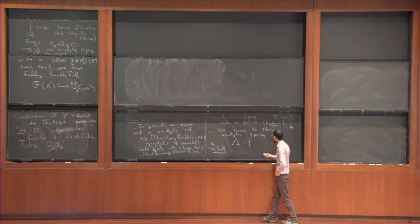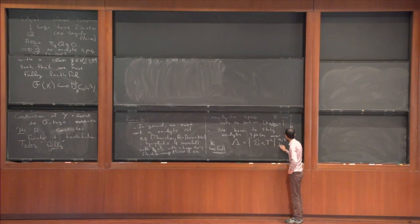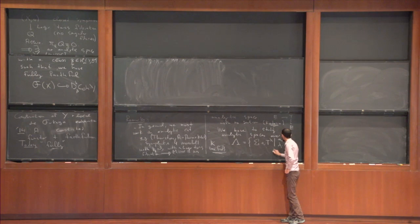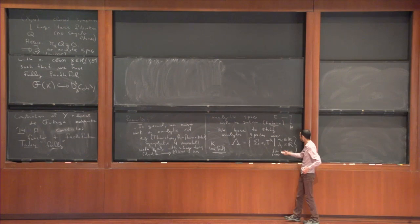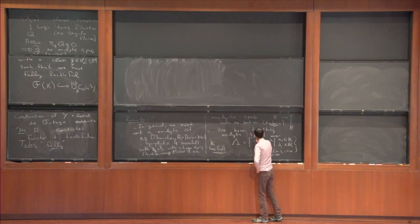If you fix a field, you can look at series — basically some kind of Laurent series in one variable where the coefficients are in my ground field. The exponents λᵢ, you might want to imagine they are integers, but instead you have to work with real numbers and assume that the limit as i goes to infinity of λᵢ equals plus infinity. This growth condition means that if you multiply two of these series, it still makes sense as an infinite series.